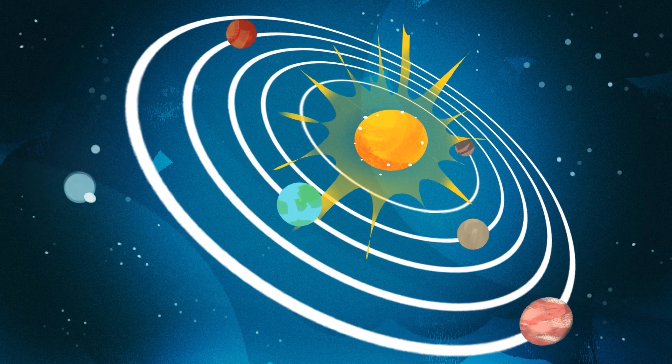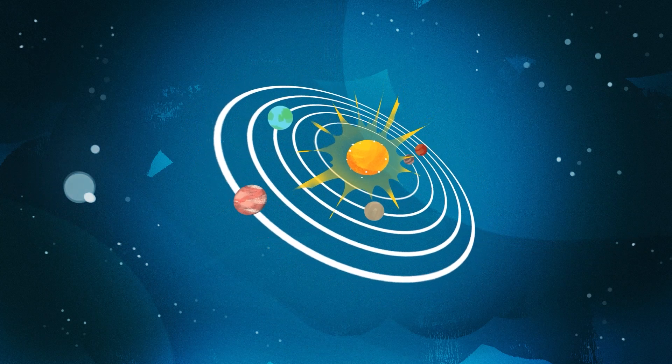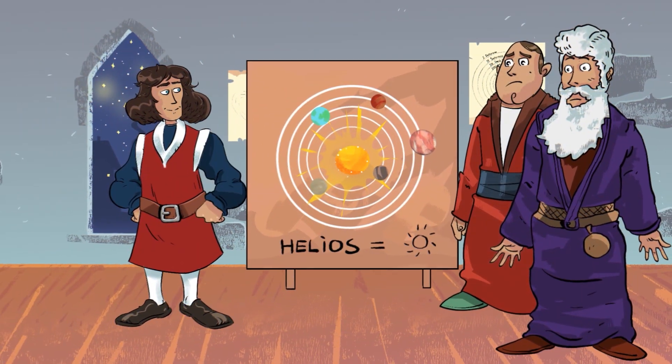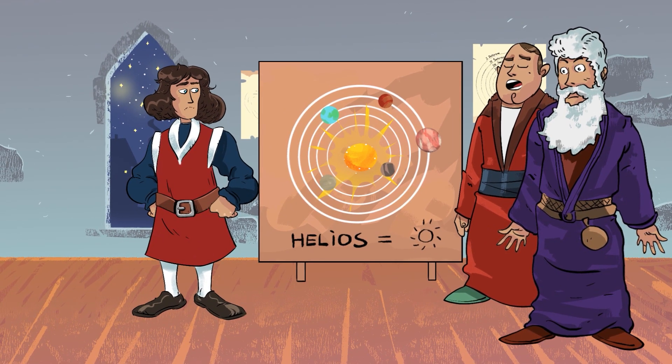Nicolaus Copernicus's theory revolutionized astronomy. It gave a new beginning to the modern views on the world's construction. Copernicus's superiors were not fond of his discoveries because he tried to prove something that could not be comprehended by anyone.